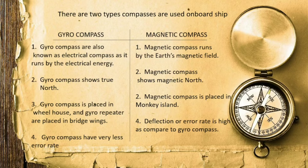The gyro compass is placed in the wheelhouse, where we navigate the ship, and gyro compass repeaters are placed in the bridge wings, engine room, cabin, and other areas of the ship so that the direction can be checked from multiple locations. The magnetic compass is placed in Monkey Island. If you want to know more about parts of ships, please check out our video.